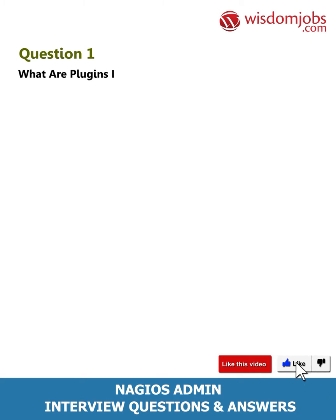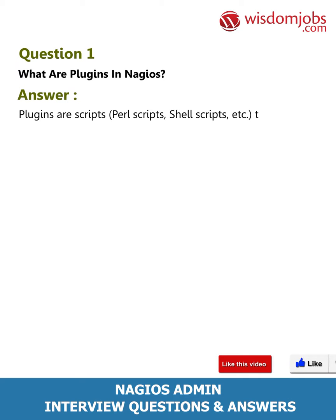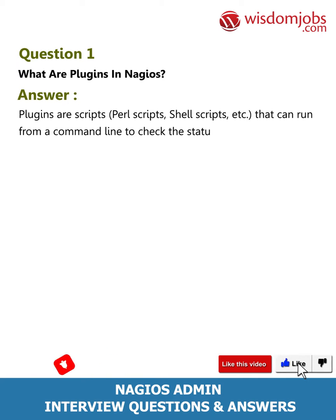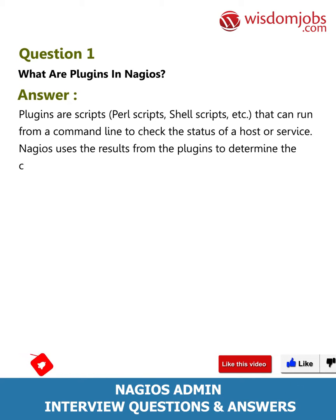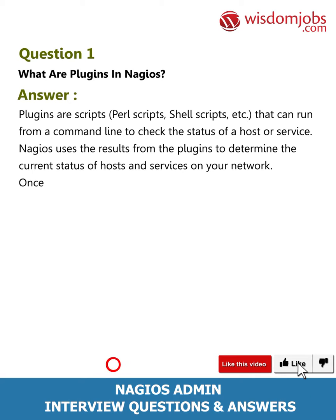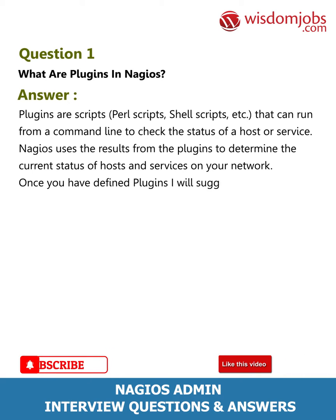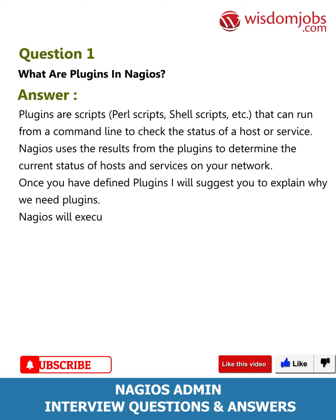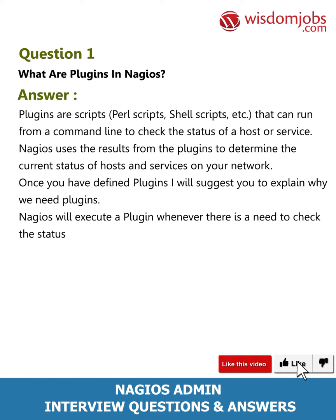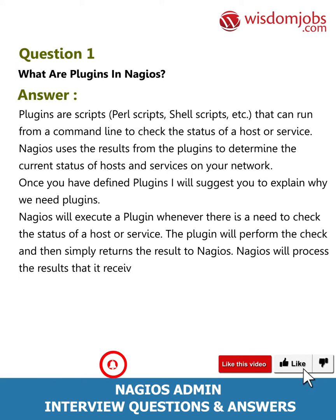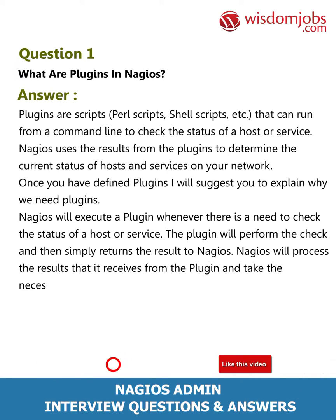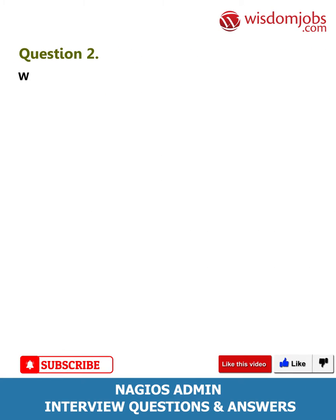Question 1: What are plugins in Nagios? Answer: Plugins are scripts — pull scripts, shell scripts, etc. — that can run from a command line to check the status of a host or service. Nagios uses the results from the plugins to determine the current status of hosts and services on your network. Nagios will execute a plugin whenever there is a need to check the status of a host or service. The plugin will perform the check and then simply returns the result to Nagios, which will process the results and take the necessary actions.